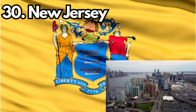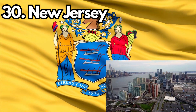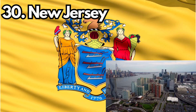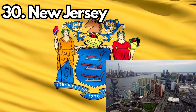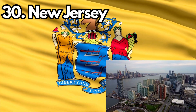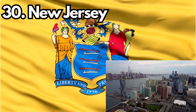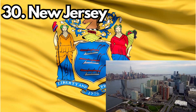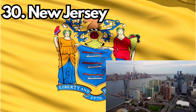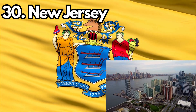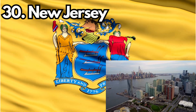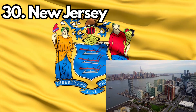30. New Jersey. Design: The New Jersey state flag features the state coat of arms on a buff-colored field. Meaning: The coat of arms includes symbols of New Jersey's agricultural and industrial heritage. History: The current design was adopted in 1896.